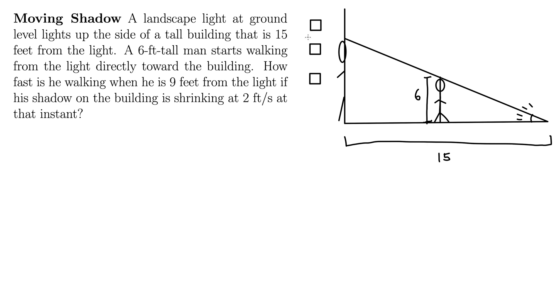So let's fill out what else would we need for our similar triangles here. Let's let X be the distance from the man to the light, so that gives us X compared to 15. And let's let Y be this distance of the shadow up on the building. There we go.